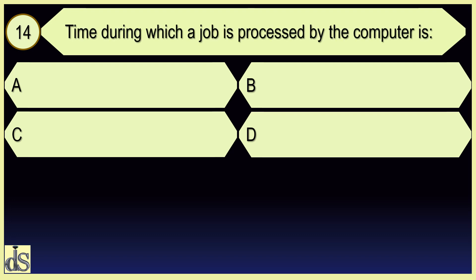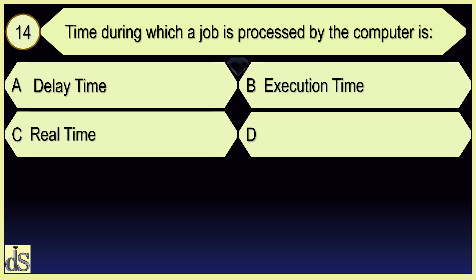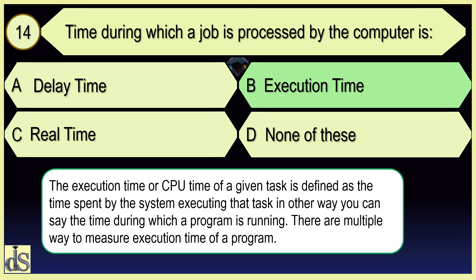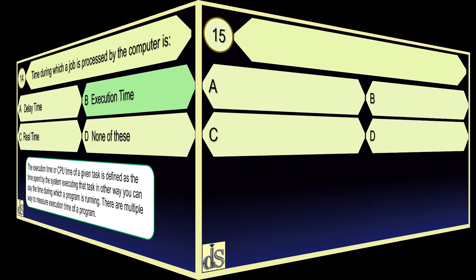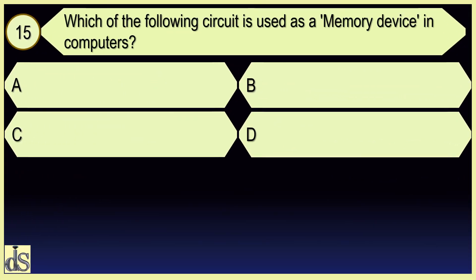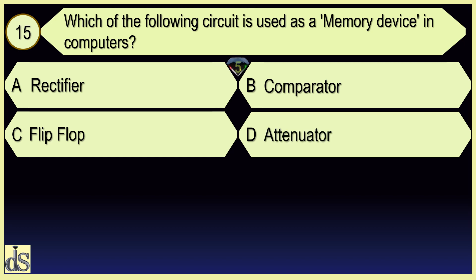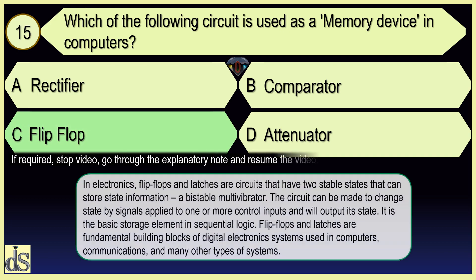Time during which a job is processed by the computer is called Execution Time. Which of the following circuit is used as a memory device in computers? FLIP-FLOP.